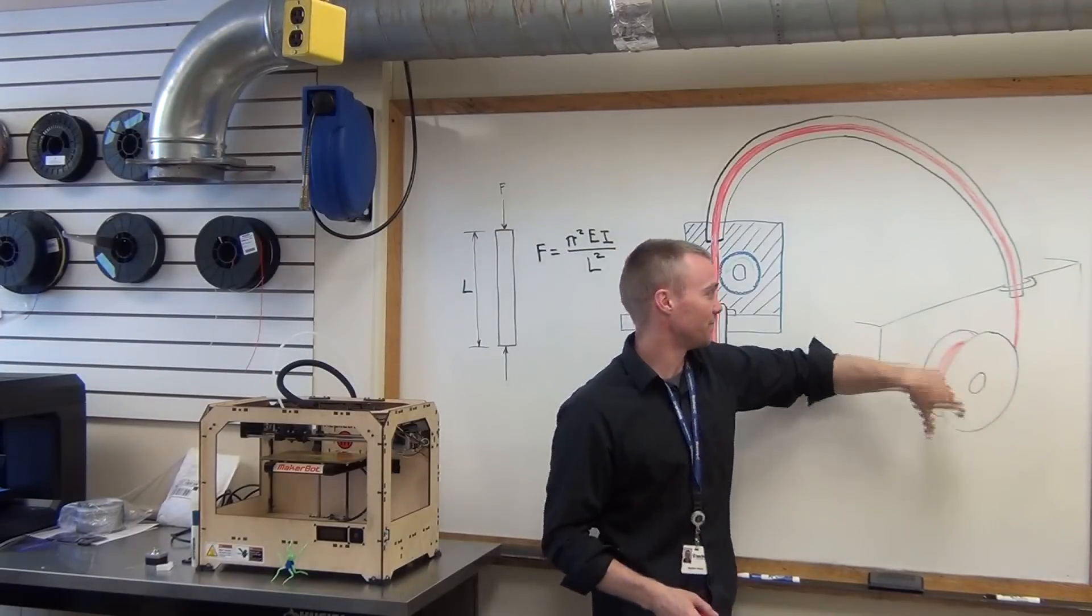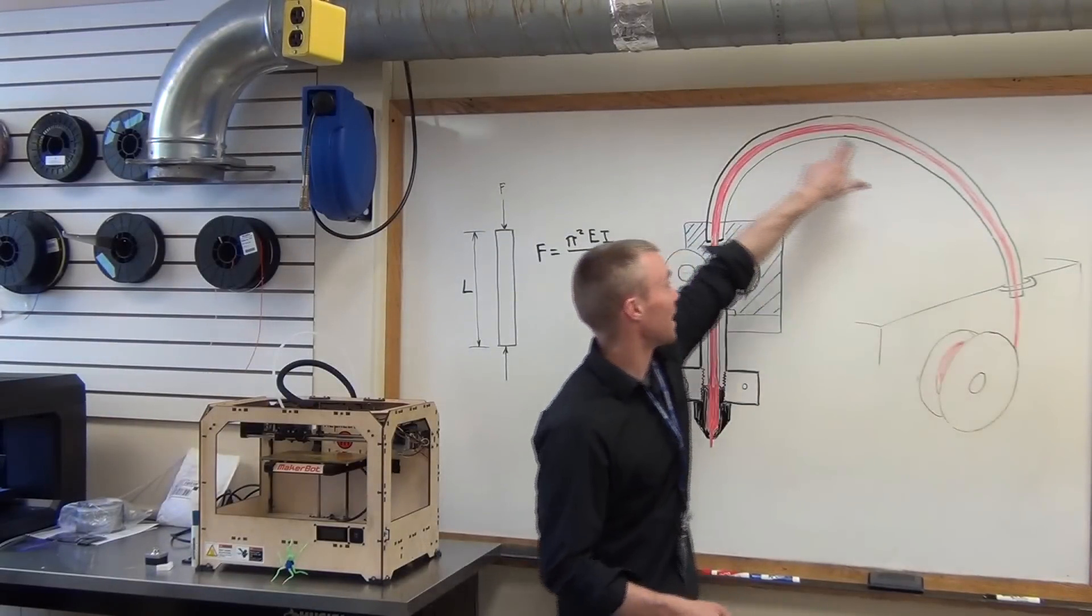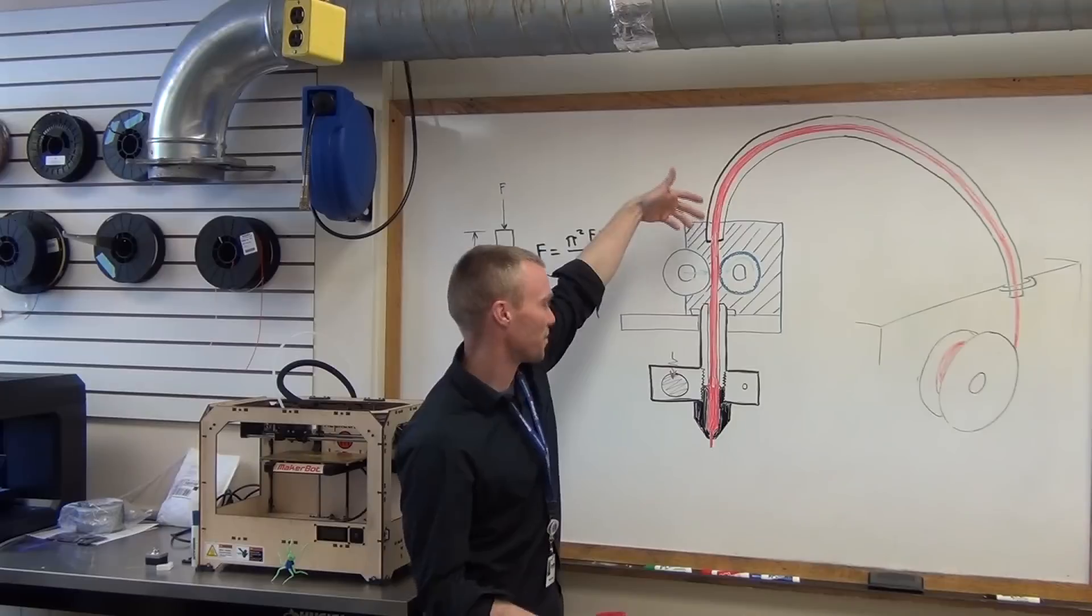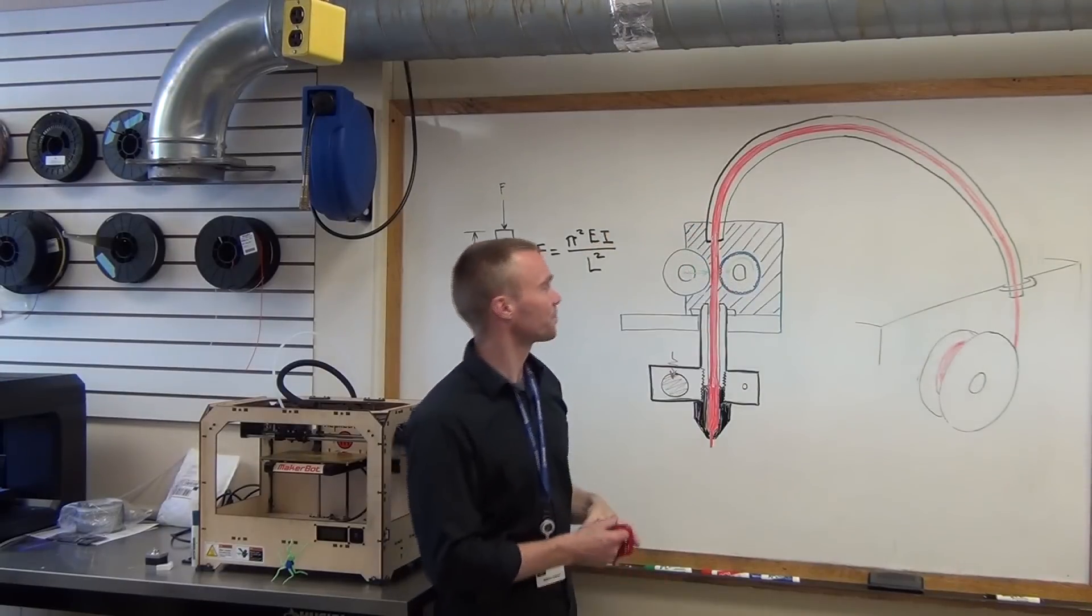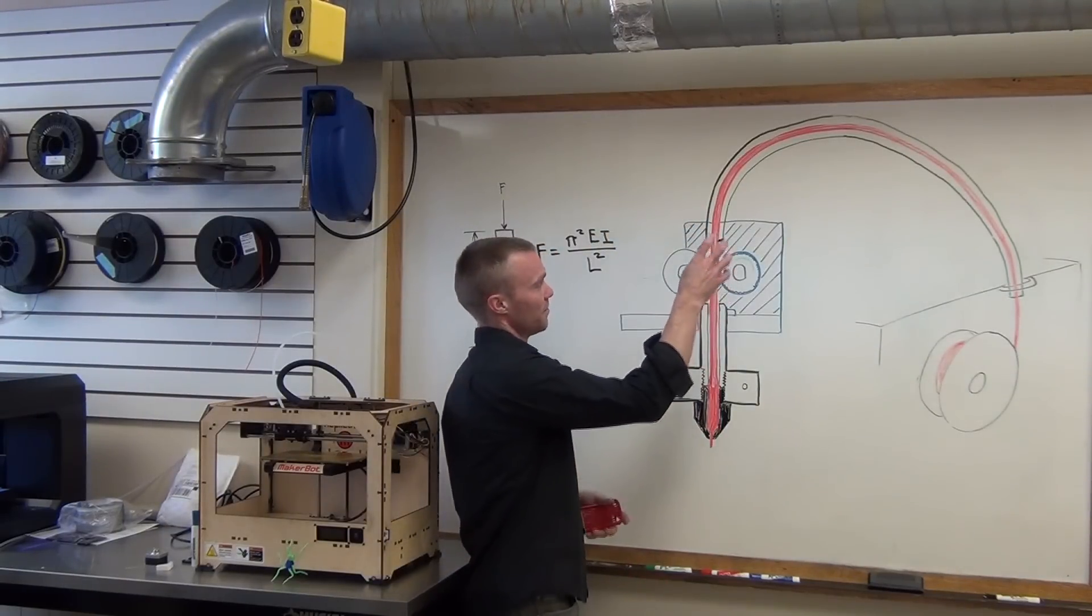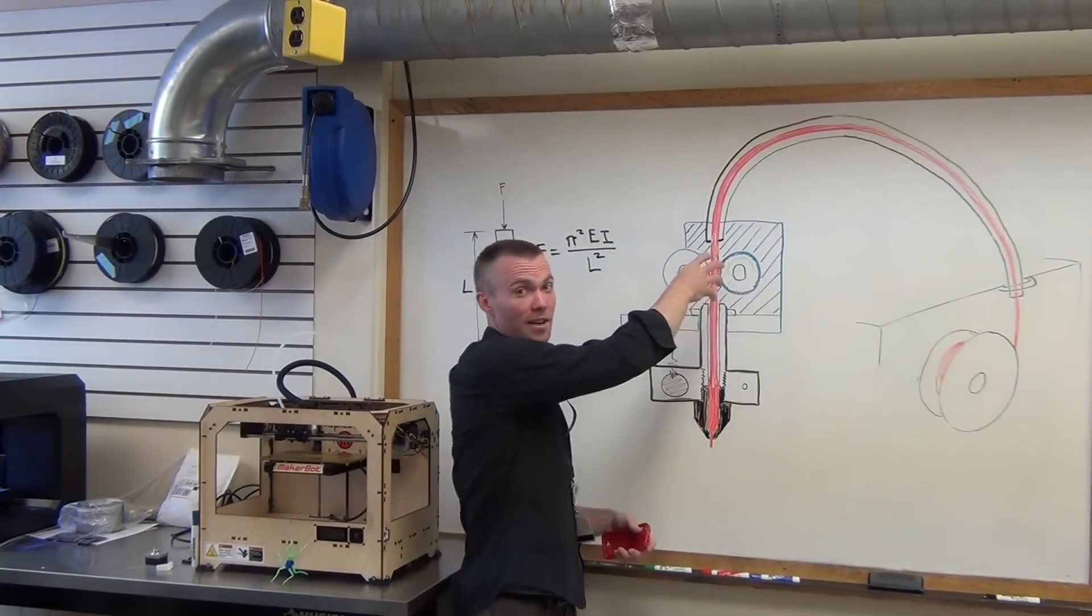You've got your filament mounted somewhere on the machine on a spool. You have a guide tube running from the spool to the print head. Within the print head, you'll have your stepper motor with your drive gear attached to it.